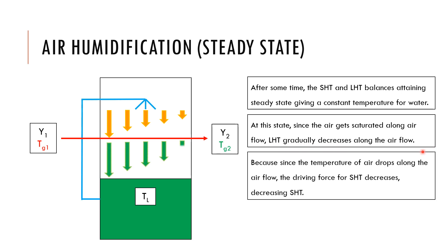If you consider the sensible heat transfer, T_l is constant throughout the tank — along this airflow the liquid temperature is constant because the tank is homogeneously mixed. However, the temperature in the gas stream changes, because as we discussed earlier the air is getting cooled along the line due to heat loss from air to liquid through sensible heat transfer.